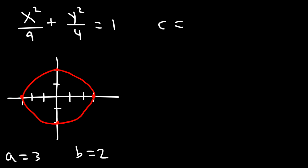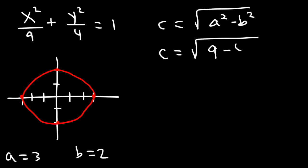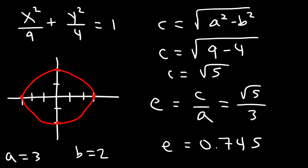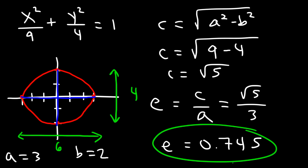Now let's calculate the eccentricity. c = √(a² − b²) = √(9 − 4) = √5. The eccentricity is c/a = √5 / 3, which equals approximately 0.745. As you can see, this ellipse is not circular — it's 6 units along the major axis and a little elongated, which is why e is significantly greater than 0.